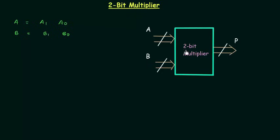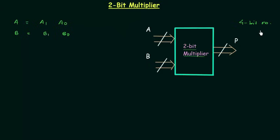This box represents the 2-bit multiplier circuit. A and B are the two inputs, represented by thick arrows because they are multi-bit numbers — A is 2 bits and B is also 2 bits. The output is P, where P stands for the product obtained after multiplying A and B. P is a 4-bit number because when you multiply two 2-bit numbers, the maximum possible output is a 4-bit number. The 4 bits of the product are P3, P2, P1, and P0.